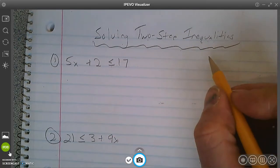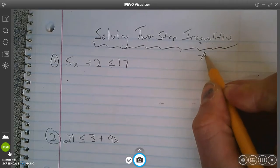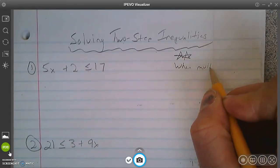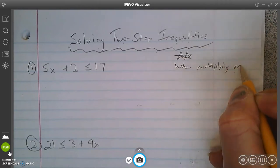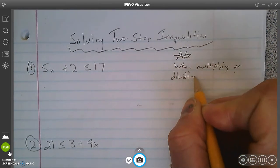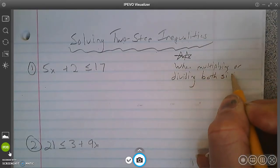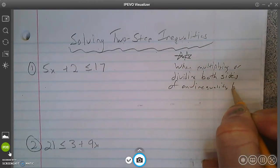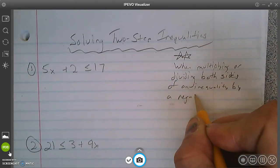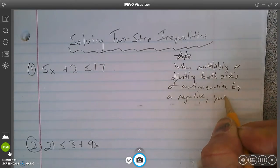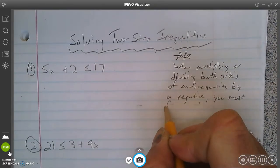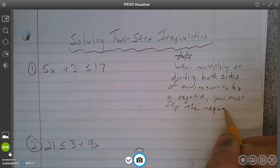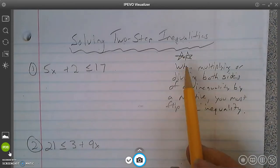Okay, same sort of rules apply. There's only one special, special, special thing. We put the two stars, remember this. When multiplying, write this down, or dividing both sides of an inequality by a negative, you must flip the inequality. There you go. Write that down.